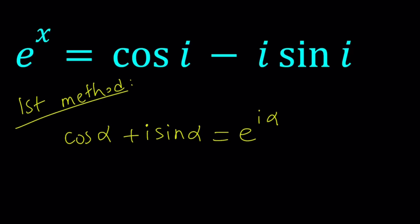So now if you replace alpha with negative alpha, this is what's cool about this because you can replace alpha with anything, then you're going to get something like cosine of negative alpha plus i sine negative alpha is going to be e to the power i negative alpha.